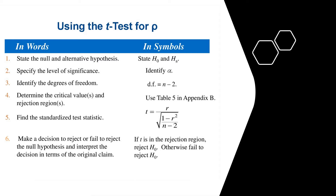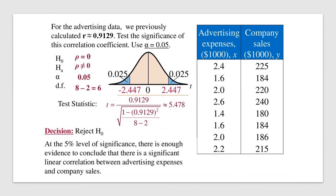T-test stands for test statistics. For the advertising data, we calculated that the coefficient of correlation was equal to 0.9129. To find the test statistic, we first state the null and alternate hypothesis, then identify the significance level, and then calculate the degree of freedom using the formula n minus 2. In this case, n is equal to 8. After substituting into the test statistics formula, we made the decision to reject the null hypothesis. At the 5% level of significance, there is enough evidence to conclude that there is a significant linear correlation between advertising expenses and company sales.